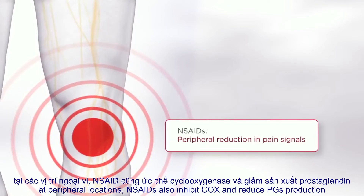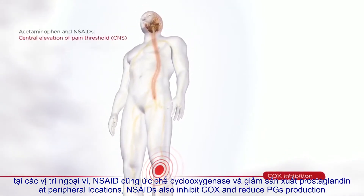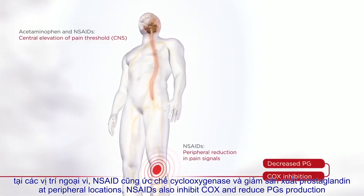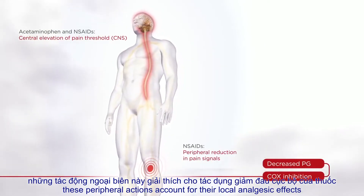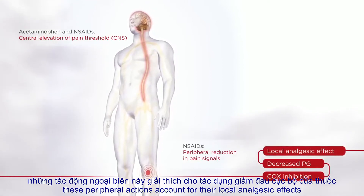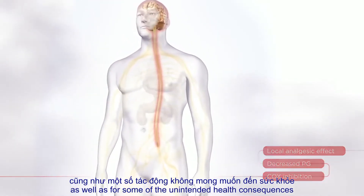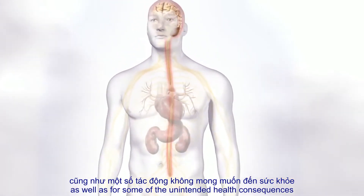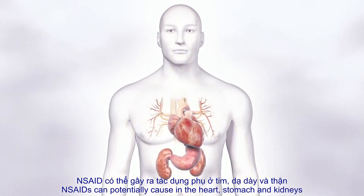At peripheral locations, NSAIDs also inhibit cyclooxygenase and reduce prostaglandin production. These peripheral actions account for their local analgesic effects, as well as for some of the unintended health consequences NSAIDs can potentially cause in the heart, stomach, and kidneys.